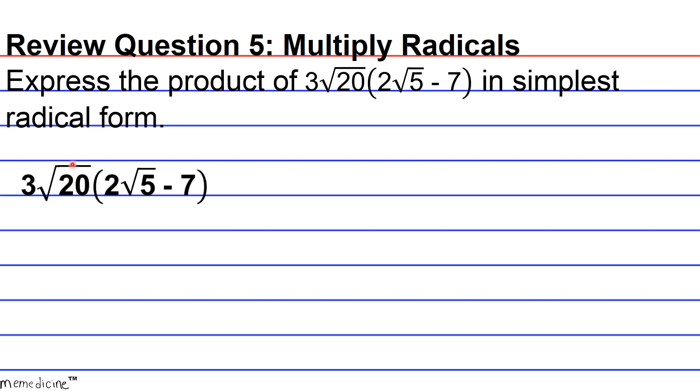When we distribute 3√20 to the second expression in this binomial, we get 21√20 because we're multiplying the coefficients, or the non-radical terms. The result should look something like this.